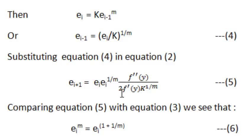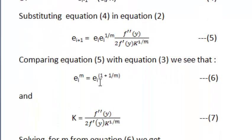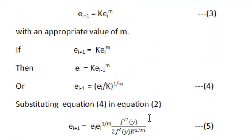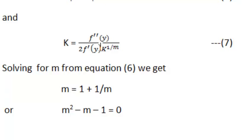Comparing equation number 5 with equation number 3, in place of E_i to the power m we have E_i into E_i to the power 1 by m. So we can write this as E_i to the power 1 plus 1 by m. The constant term k corresponds to f double dash y divided by 2 into f dash y into k to the power 1 by m. This gives us equation number 6.